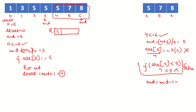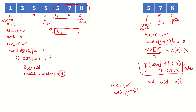End becomes 5 minus 1, which is 4. Now start is 4 and end is 4 — the condition is true. Mid is calculated as 4. At arr[4] the element is 5, so the condition becomes true.